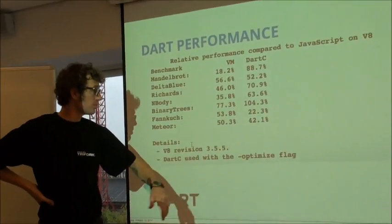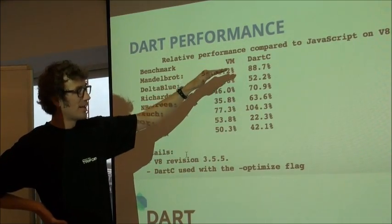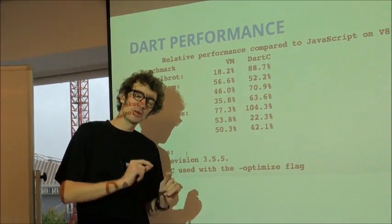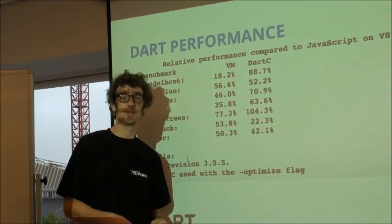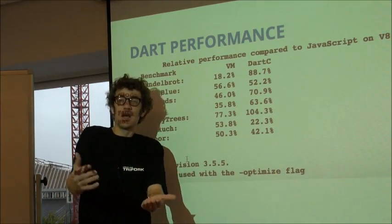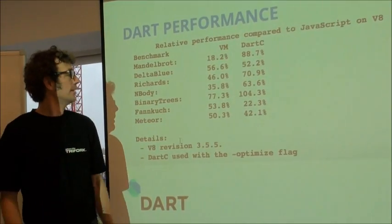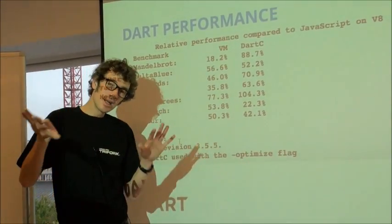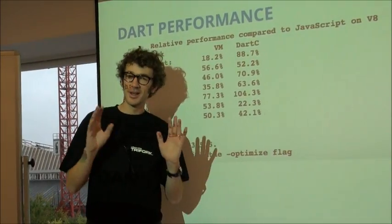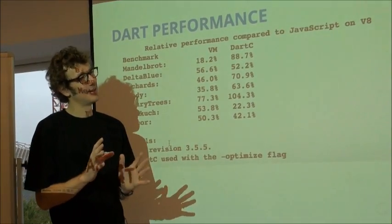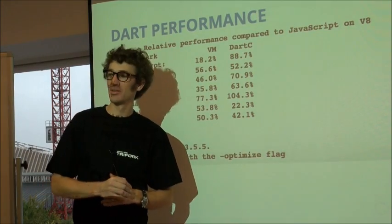On performance, the numbers show almost all below 100 compared to hand-optimized JavaScript, meaning it's still somewhat slower for a number of different examples. They're not blowing us away saying this language is ten times faster than JavaScript. But it's in a comparable range, and it's very early. Lars said that before they call this a production release, it would all be faster than JavaScript. We'll see.